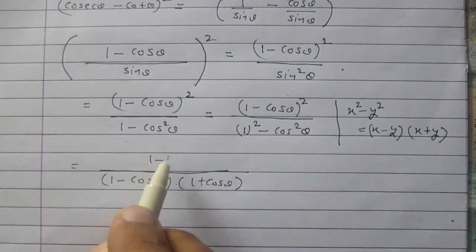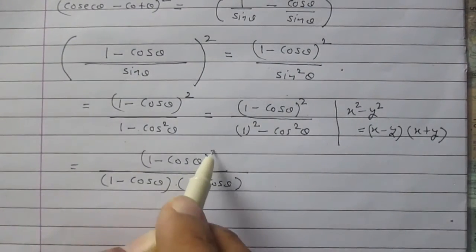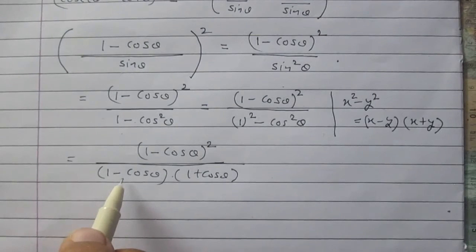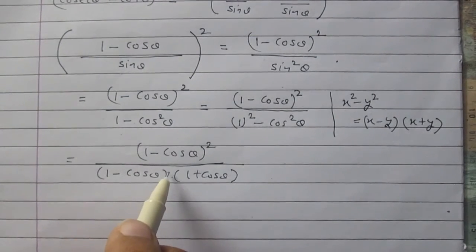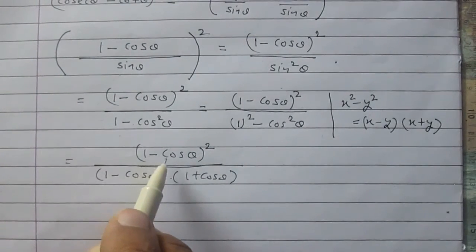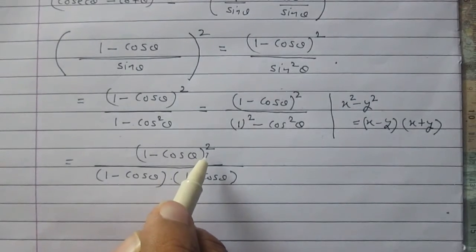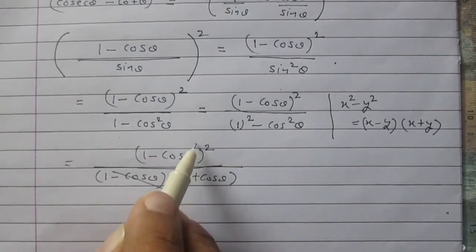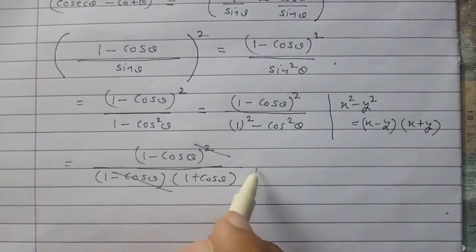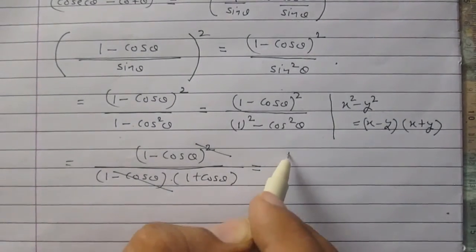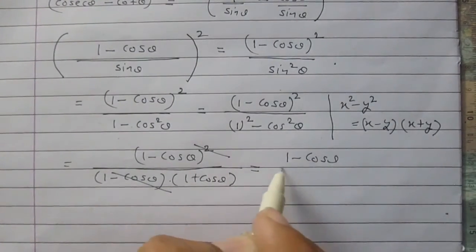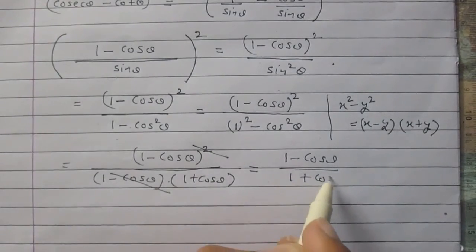Numerator is as it is, 1 minus cos theta whole square. Now 1 minus cos theta raised to power 1 in the denominator and 1 minus cos theta whole square in the numerator. So we can reduce one term. It will become 1 minus cos theta upon 1 plus cos theta.